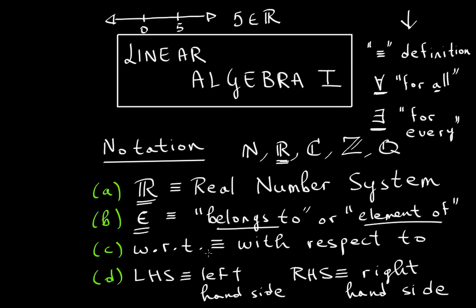The WRT, LHS, and RHS notations are used in proofs — you won't see them to denote a mathematical statement. You will only use them to write or read proofs. Now, let's move on to some properties.